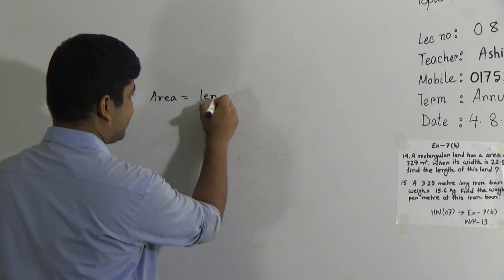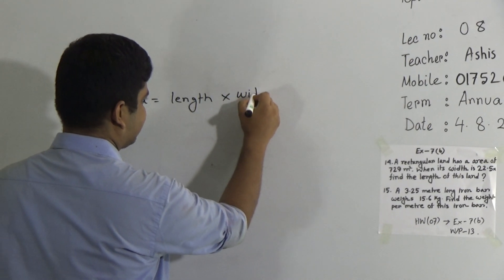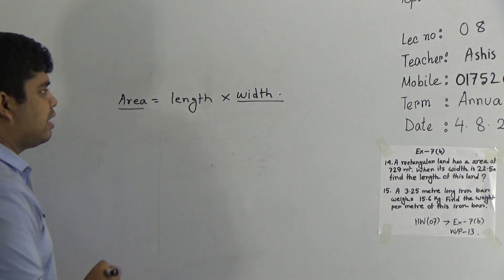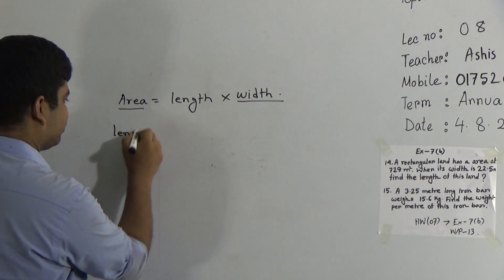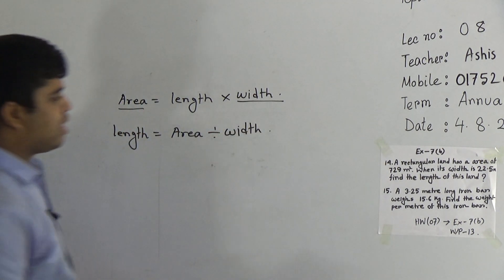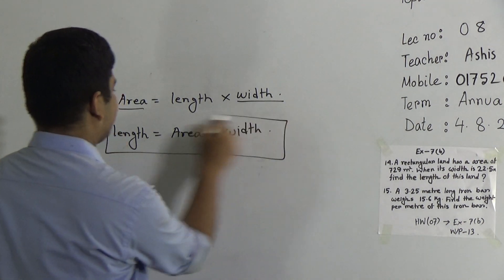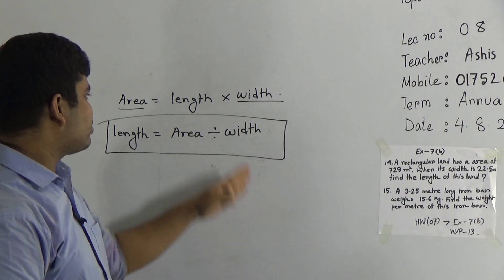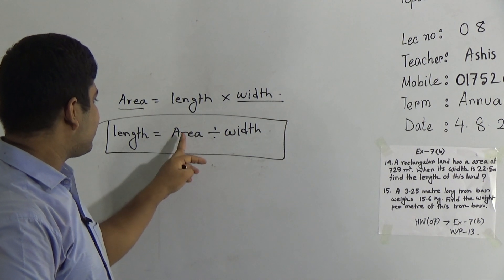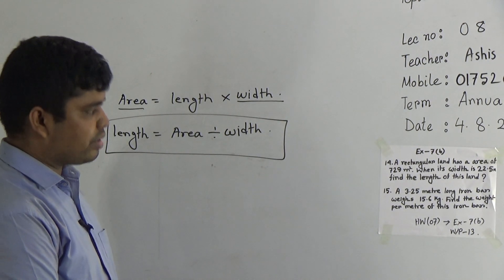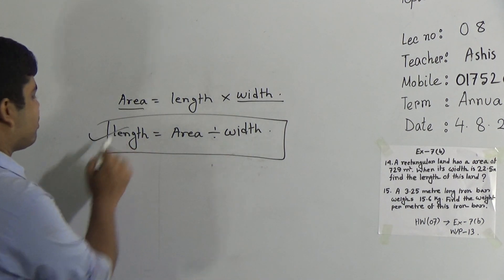We know area of rectangle equals length multiply width. So if area is given and width is given, how can we find out length? That means we do division. That means length equals area divided by width. Then we get the answer. We use this formula in this math: length equals area divided by width. But if the question asks you to find out the width, then you must divide area by length and you get the required width.